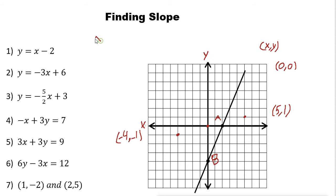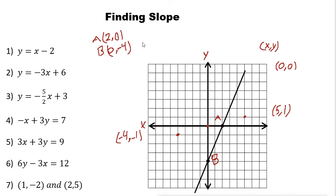Point A is 2 units to the right and doesn't go up or down, so A is (2, 0). Point B is on the Y-axis, so X is 0, and it is 1, 2, 3, 4 units down, so Y is negative 4. So B is (0, −4).